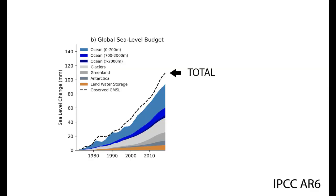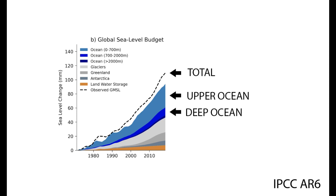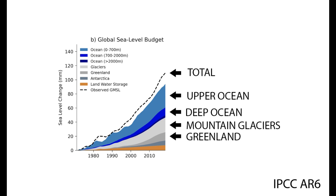Contrary to common perception, there is not one singular source of sea level rise. Since the 1980s, the most common factors leading to higher water levels are thermal expansion of the upper ocean, thermal expansion of the deep ocean, melting of the world's 200,000 mountain glaciers, mass loss from Greenland and other Arctic ice sheets, and changes in the water stored on land.